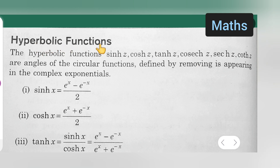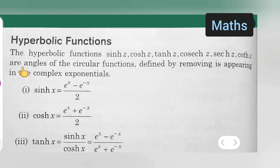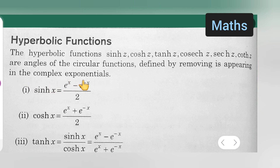The hyperbolic functions — sine hyperbolic z, cos hyperbolic z, tan hyperbolic z, cosec hyperbolic z, sec hyperbolic z, and cot hyperbolic z — are analogs of the circular functions defined by removing i appearing in the complex exponential.